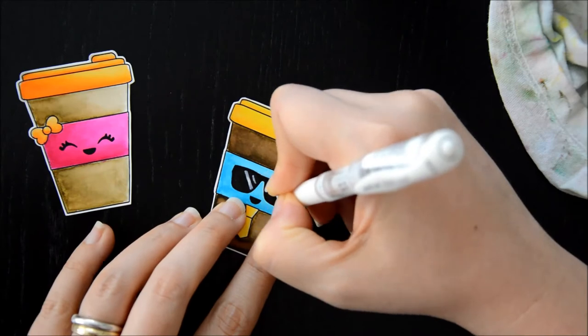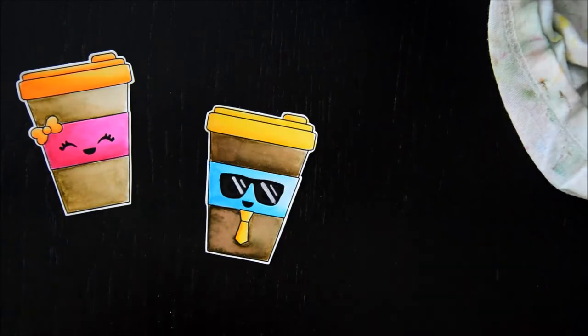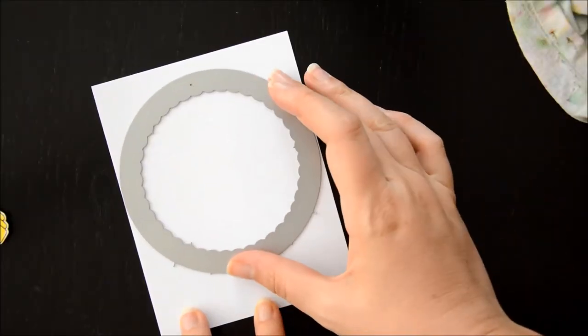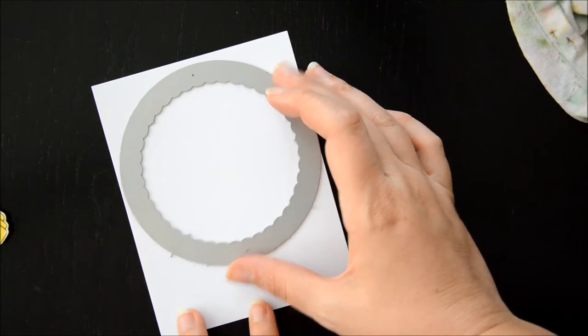And here I'm coming in with my white gel pen to add some reflections on the glasses to make it look even more realistic. And now that I'm done with my images, I can move on to the card base.